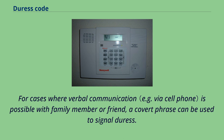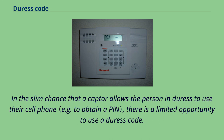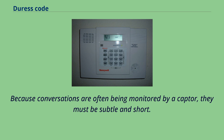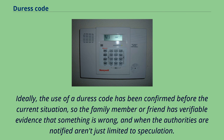For cases where verbal communication is possible with a family member or friend, a covert phrase can be used to signal duress. In the slim chance that a captor allows the person in duress to use their cell phone, there is a limited opportunity to use a duress code. Because conversations are often being monitored by a captor, they must be subtle and short. Ideally, the use of a duress code has been confirmed before the current situation, so the family member or friend has verifiable evidence that something is wrong, and when the authorities are notified, aren't just limited to speculation.